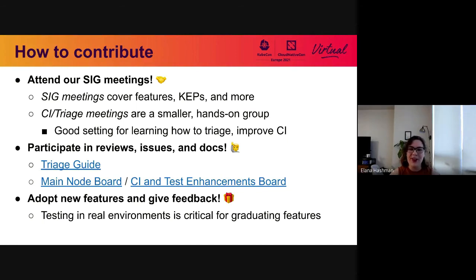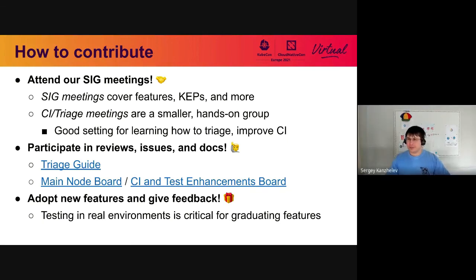We also welcome people to adopt new features and give feedback. Writing code is not the only way you can make Kubernetes better. It's really important for a lot of our features, particularly as we focus on graduating things from beta to GA, that we get test data from real environments to ensure we're not introducing regressions and that performance is okay. So testers are very welcome to join us. And even if you're not considering yourself a tester, just give us feedback on what you're using and what you're not.